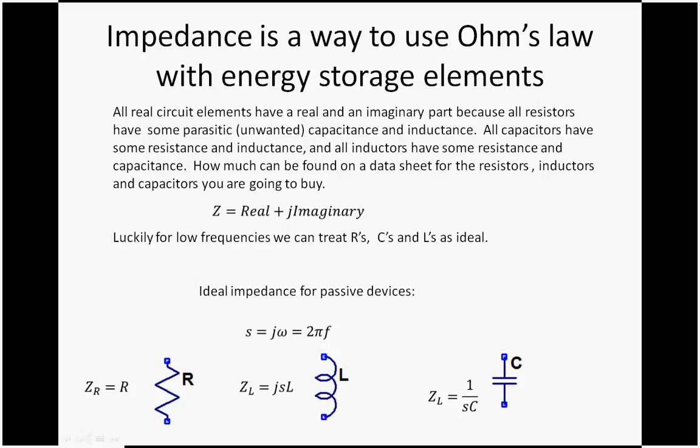For the resistor, impedance is R because there is no frequency dependence for a pure resistor. For a pure inductor, the impedance is jsL.